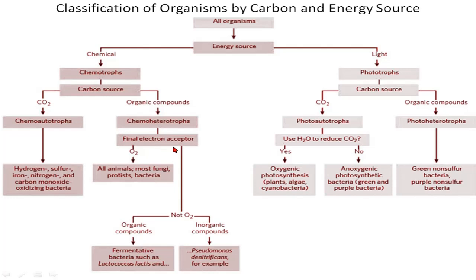If the final electron acceptor is not O₂, it can be either organic compounds — as in the case of fermentation, such as alcohol or curd preparation, which occurs in the absence of O₂ — or it can be inorganic compounds. In fermentation, the electron acceptors are organic compounds.